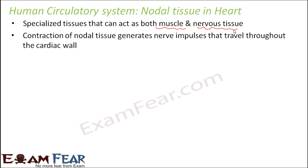Nodal tissues generate nerve impulses that can travel throughout the cardiac wall. The conduction of these impulses takes place inside the heart through the walls of the heart. These impulses actually excite other cells of the heart and cause contraction elsewhere. The contraction of nodal tissue and the ability to generate nerve impulses plays the vital role in the process of circulation and in the functioning of the heart.